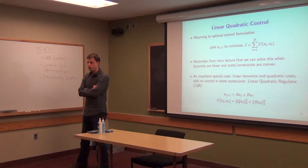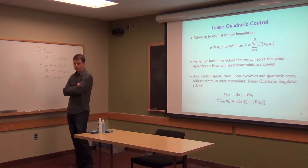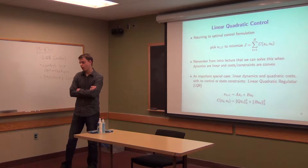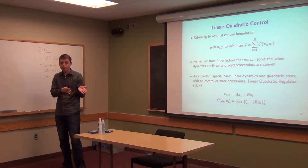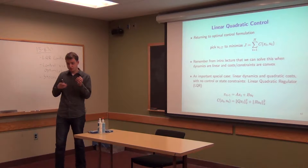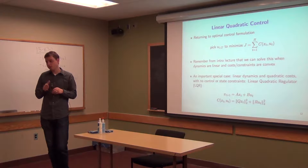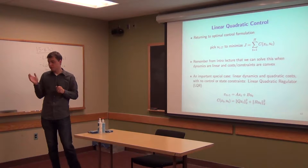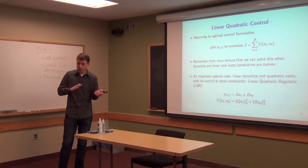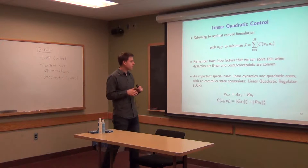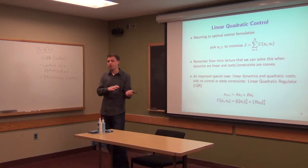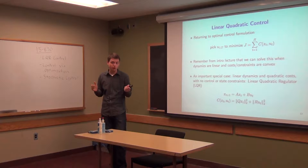We've gone through a couple different methods of controlling systems. We started with PID control, built that incrementally: first looking at the P part, which measures deviation from the absolute target; then the D part, which measures deviation from the derivatives to slow things down; and the integrator part, which accounts for not knowing the steady-state feedforward terms.